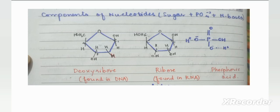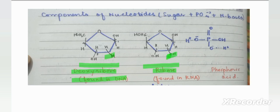There are two pentose sugars in nucleotides. The first is deoxyribose and the other is ribose. Deoxyribose means removal of oxygen — at carbon number 2, only a hydrogen atom is present, and deoxyribose is found only in DNA. In ribose sugar, a hydroxyl group is present at carbon number 2, and ribose is found in RNA. If the hydroxyl group is replaced by a hydrogen atom, it becomes deoxyribose. The only difference between both sugars is at carbon number 2.